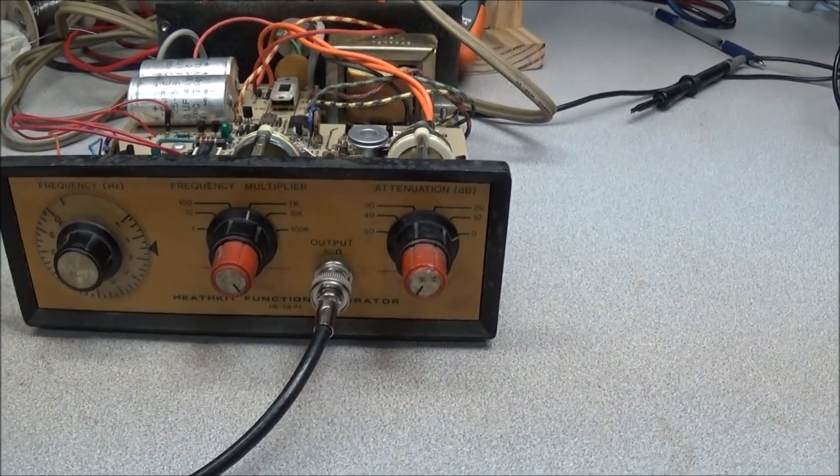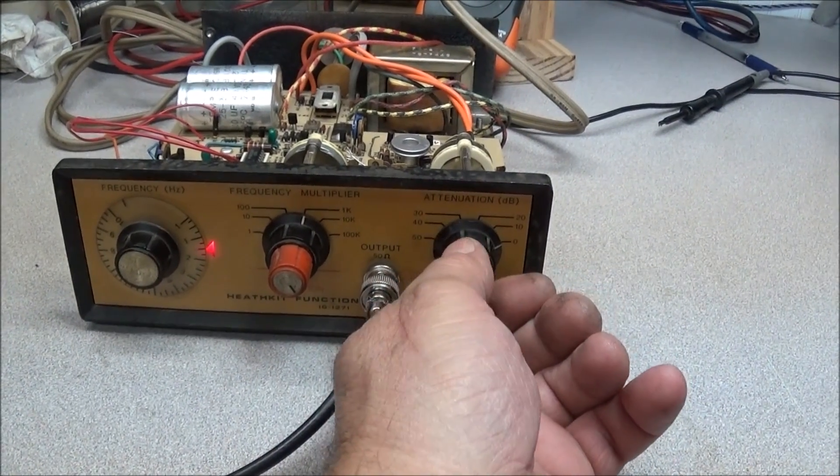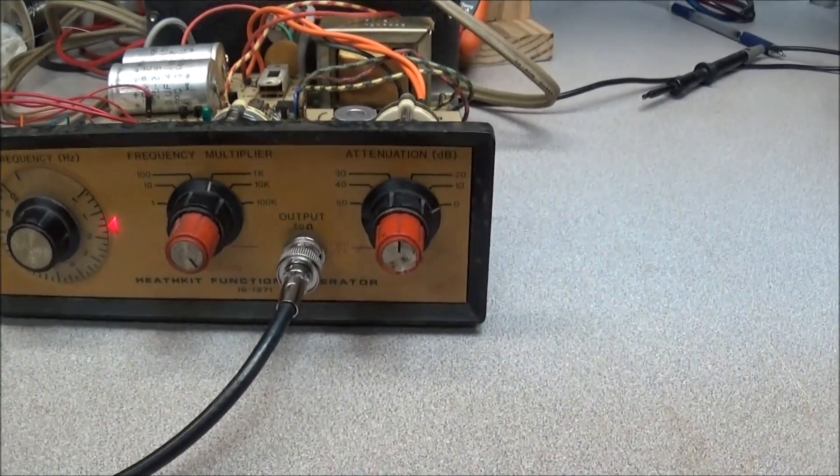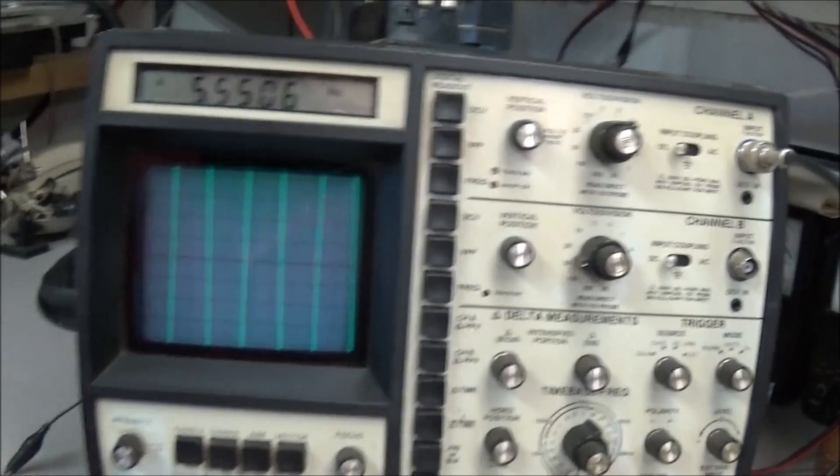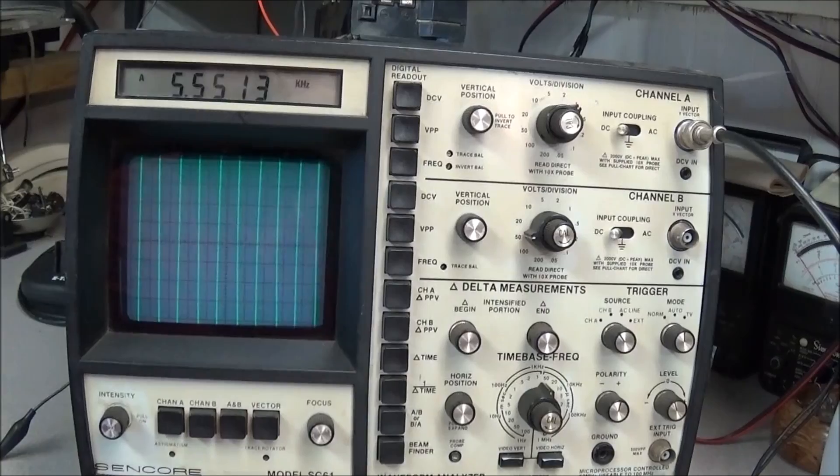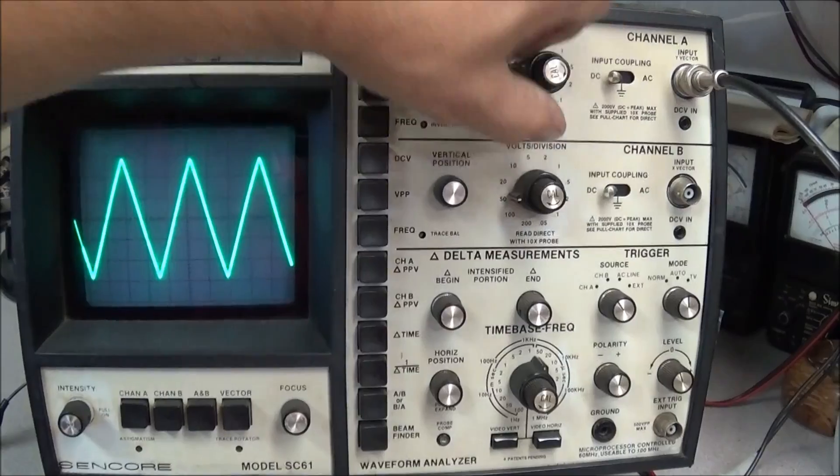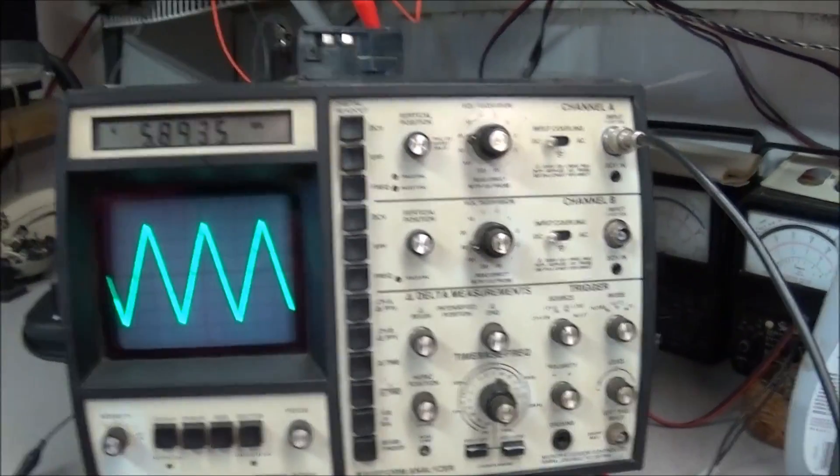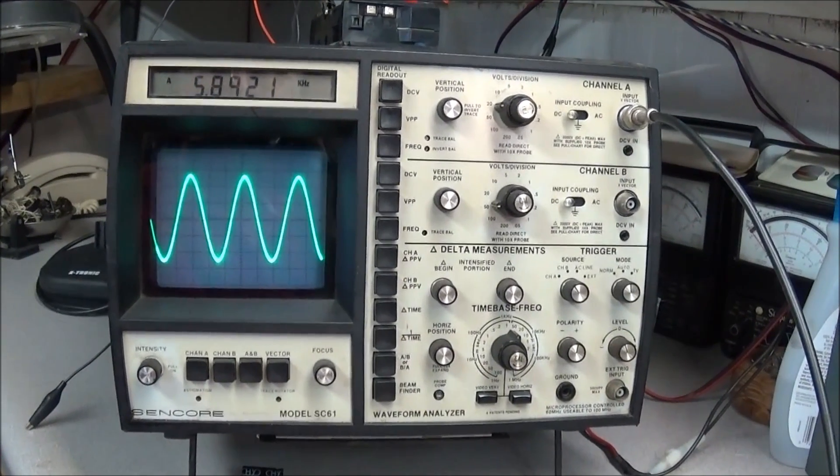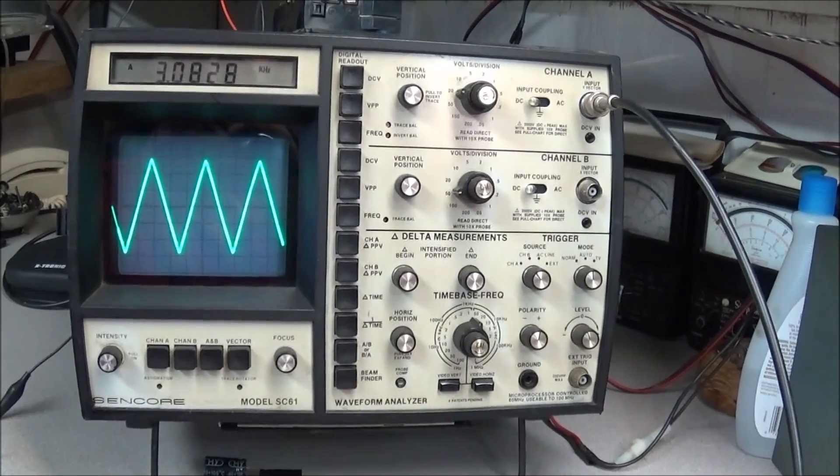I now have the unit hooked to my oscilloscope and we'll fire it up and see if we get anything. Indicators come on, and we'll look at the scope. We'll bring the frequency down, change the volts per division, and the unit is now putting out a sine wave, square wave, triangle wave.